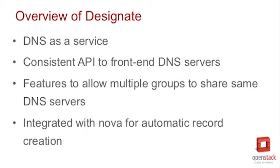Can you tell us a little bit about Designate and what it does? Designate is a consistent API that runs in front of different DNS servers. No matter what DNS server a deployer has, the API for end users will be the same. Because it's an easy to consume API and we have features that allow multi-tenancy or multiple different groups to share the same DNS servers, it makes it a lot easier for deployers to allow self-service DNS.